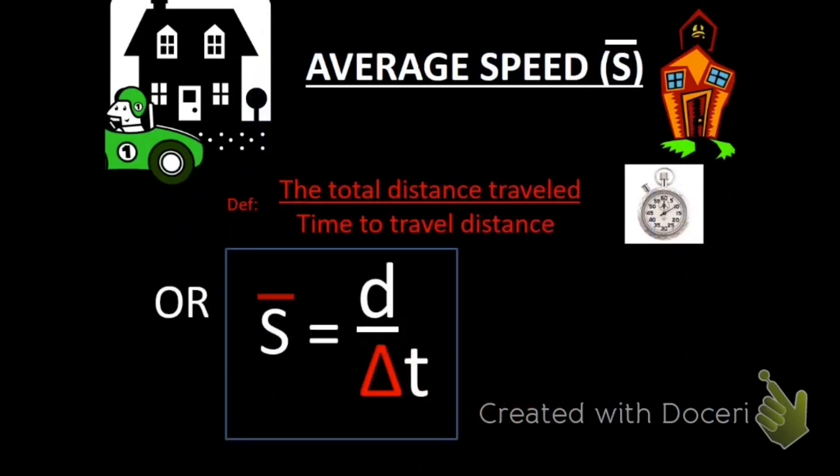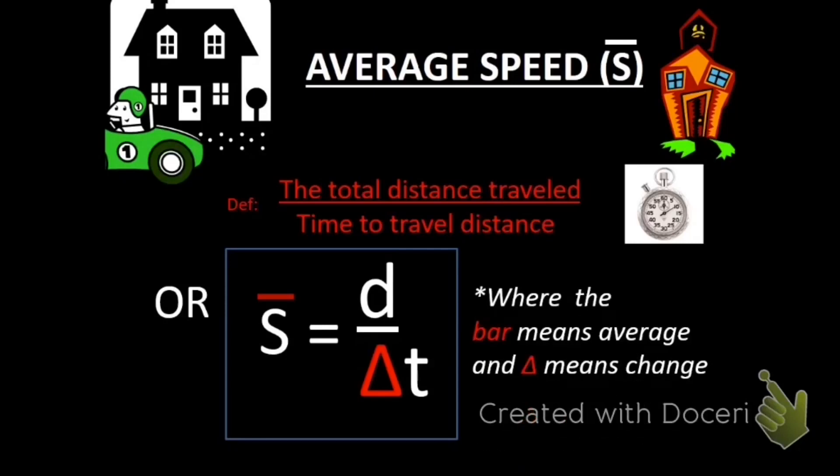s with the bar on top equals distance divided by time. Let's talk about these two symbols. That bar means average, so this would be the average speed. And the triangle is the term delta, and it means change. So speed, or average speed, is the distance traveled divided by the change in time, how much time it takes to travel that distance.